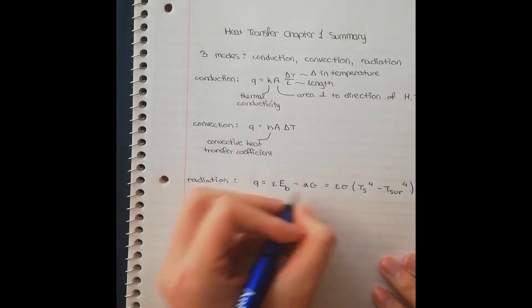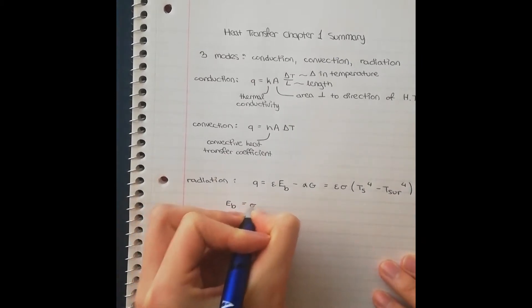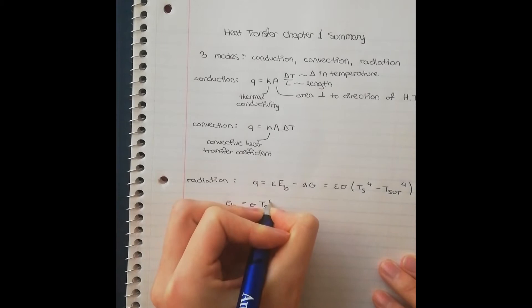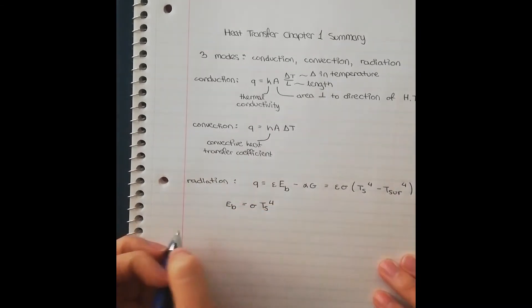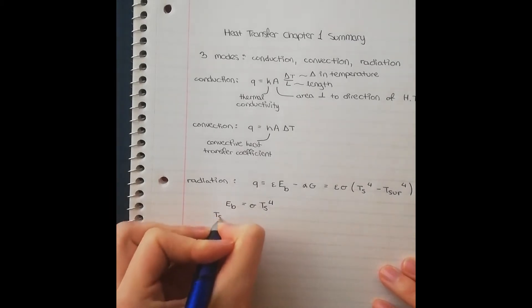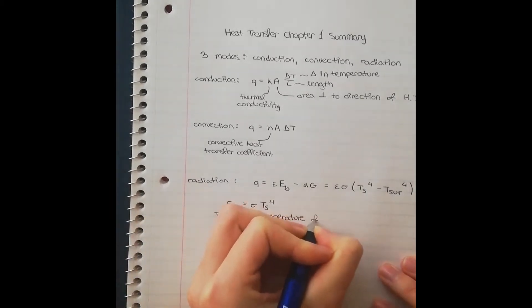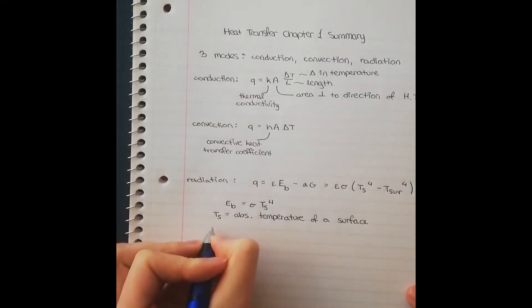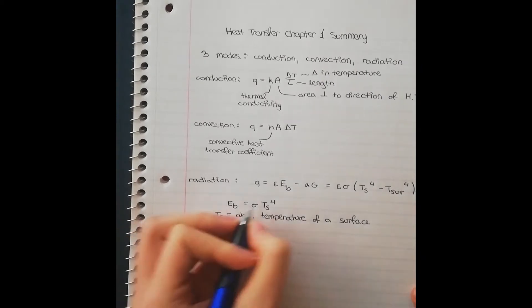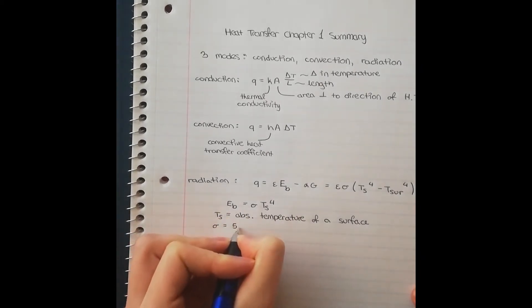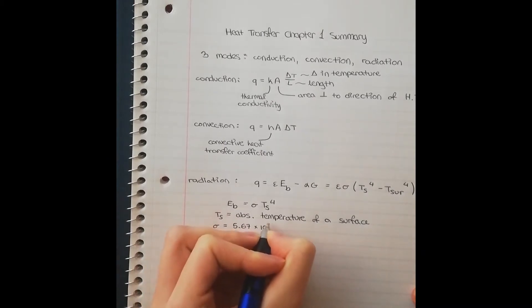Here, E B is equal to sigma T S to the 4th. So now let's talk about what each one of these characters means. T S is the absolute temperature of a surface. Sigma is equal to 5.67 times 10 to the negative 8.